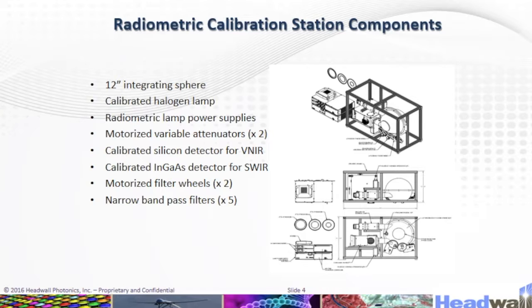In this slide, we have the radiometric calibration station components made up of a 12-inch integrated sphere, a calibrated halogen lamp, and radiometric lamp power supplies.